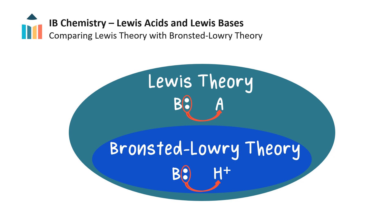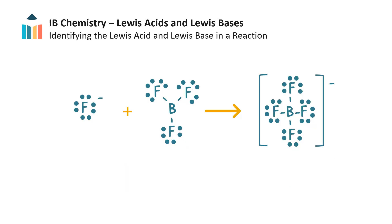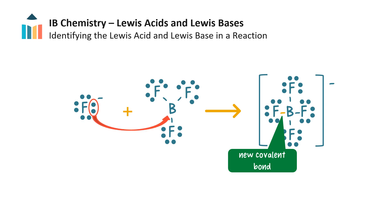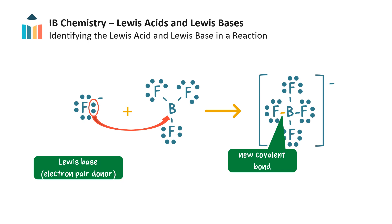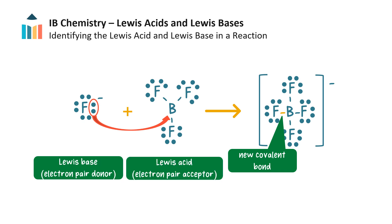Now let's practice identifying the Lewis acid and Lewis base in a Lewis acid-base reaction. Is this a Lewis acid-base reaction or a Bronsted-Lowry reaction? Well, no protons are transferred, so it is not a Bronsted-Lowry reaction. Only one product is formed. The two electrons in the new bond must have come from the lone pair on the fluoride ion, which donated a lone pair of electrons — so the fluoride ion is a Lewis base. Boron in boron trifluoride accepted the lone pair because it has an incomplete octet and a vacant orbital, so boron trifluoride is a Lewis acid. The new bond formed is a coordinate covalent bond.